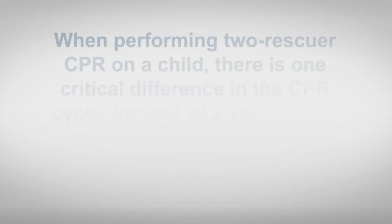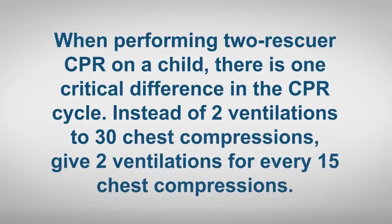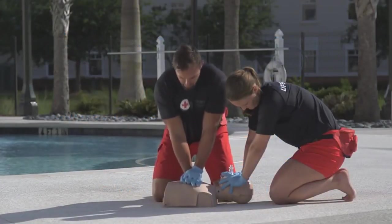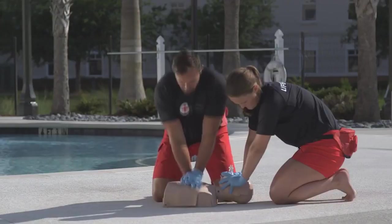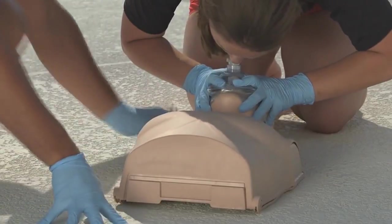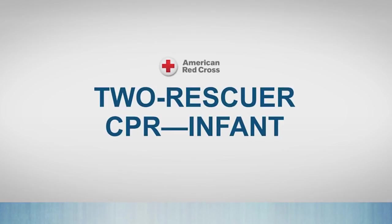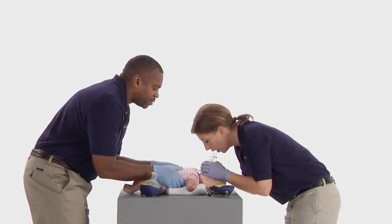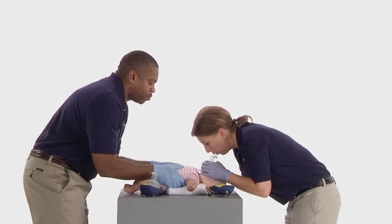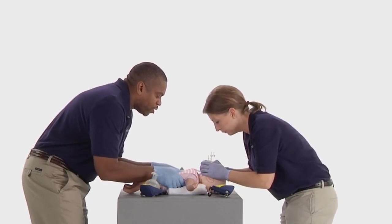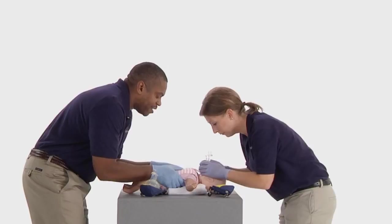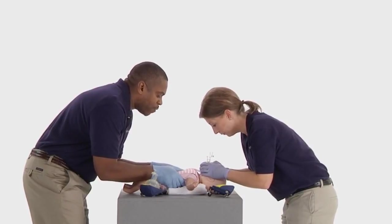When performing two-rescuer CPR on a child, there is one critical difference in the CPR cycle: instead of two ventilations to 30 chest compressions, give two ventilations for every 15 chest compressions. The rescuer giving compressions calls 'change' in place of 15 at the end of the last cycle. Two rescuers can perform CPR for an infant, but the technique is slightly different than it is for adults and children. To perform CPR for an infant, the rescuer giving compressions uses the encircling thumbs technique.